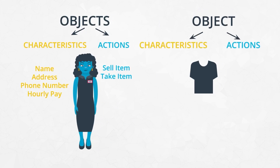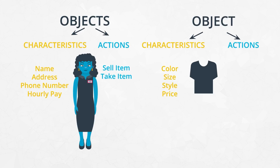As another example, a shirt's characteristics could be the color, size, style, and price. What actions could a shirt take? It might sound silly to ask a question like that since a shirt is an inanimate object, but a shirt could, for example, change its price.